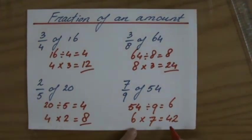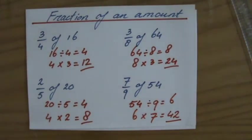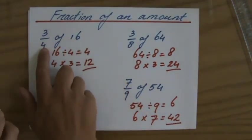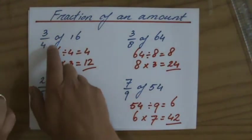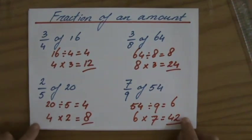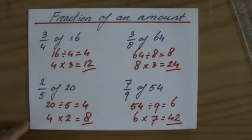So a fraction of an amount. Divide the amount in the amount of parts you're dividing it in. And then you times it by the amount of parts you are taking. I hope that was useful. Leave me a question or a comment if you still have a problem.